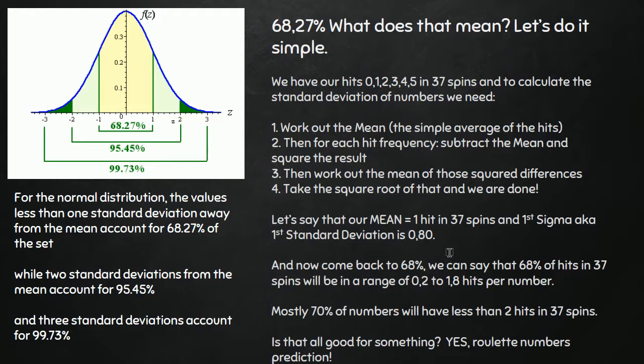And if you calculate the first sigma, like first standard deviation, you probably get a number, this is just an example, 0.80. And if you take the mean like 1 and from both sides you add and simply take a minus, then you will have a range and the range will be 0.2 to 1.8.